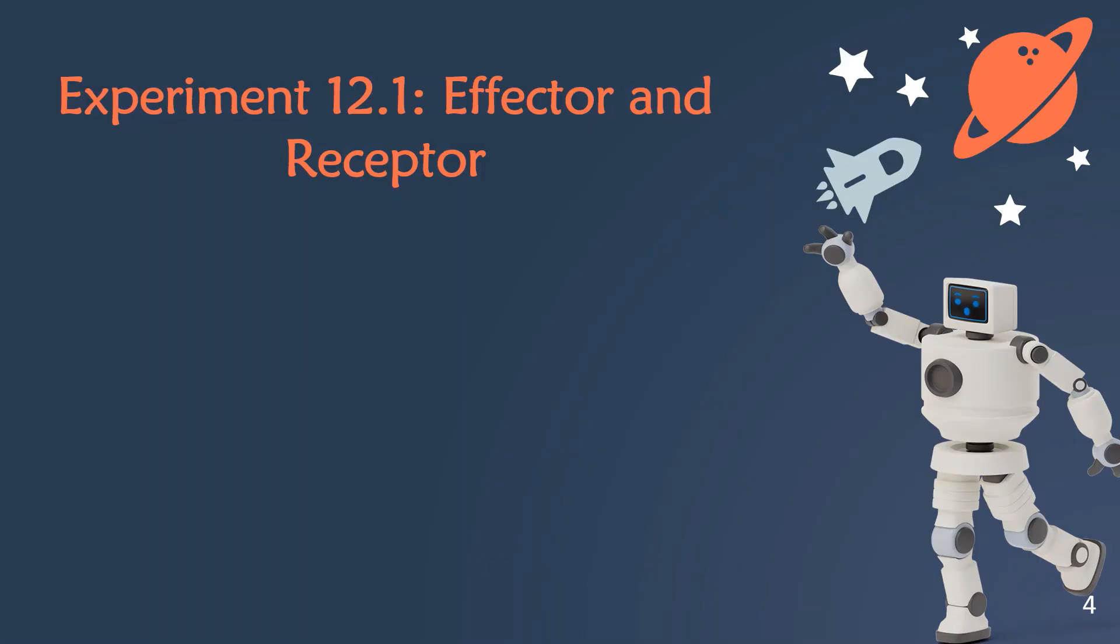In Experiment 12.1, Effector and Receptor, the learning outcome is: at the end of this lesson, students should be able to identify the receptor of taste buds in the tongue.